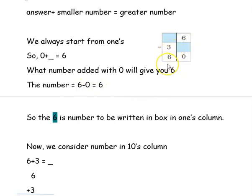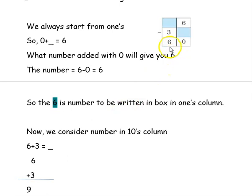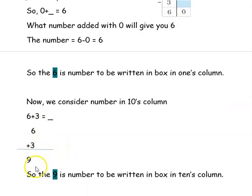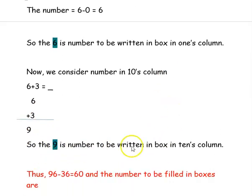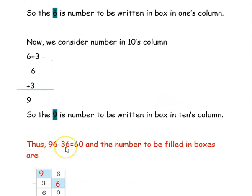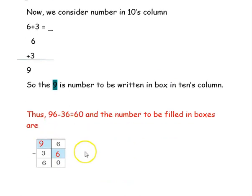Now we move to the tens column. The answer is 6 and the smaller number is 3, so 6 plus 3 equals the greater number (dash). We know 6 plus 3 is 9. So 9 is the number to be written in the tens column box. Thus 96 minus 36 is 60. The numbers filled in the boxes are 6 in the ones column and 9 in the tens column.